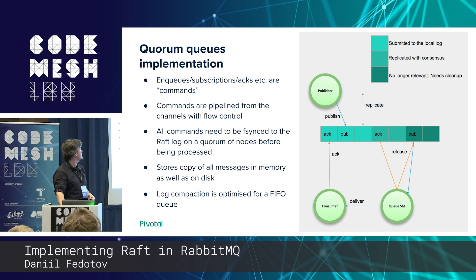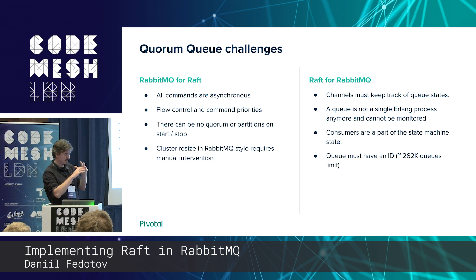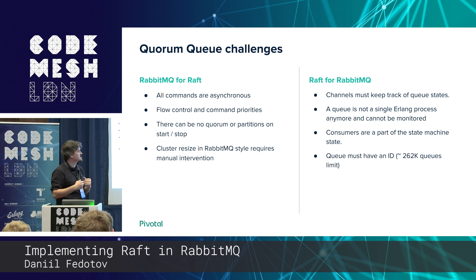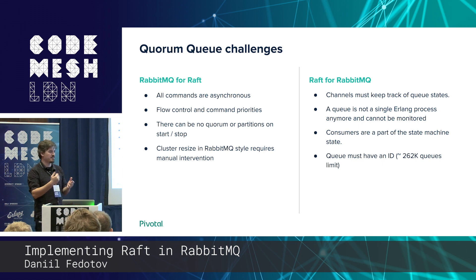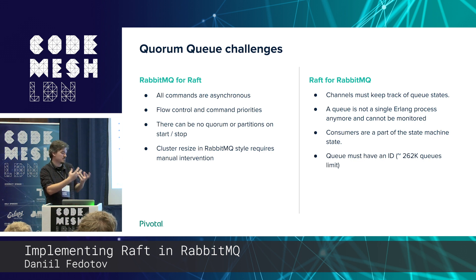Some technical details on integration challenges: the commands are asynchronous so we had to implement flow control. Flow control also has priorities — you can't just spam your queue with publishers while consumers can't consume. Consumers have higher priority, so if you have thousands of messages of ingress you can still have thousands of ingress and they balance each other. One conceptual problem we still have: if there is no quorum, you can't start, stop, delete, or declare a queue when you don't have a quorum of nodes available.